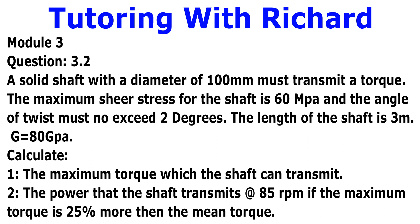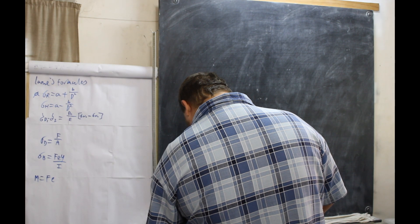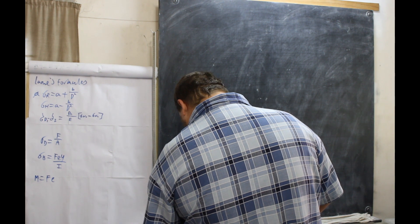Our question: a solid shaft with a diameter of 100 millimeters must transmit a torque. The maximum shear stress for the shaft is 60 megapascals and the angle of twist must not exceed two degrees. The length of the shaft is 3 meters and the modulus of rigidity is 80 gigapascals. We have to calculate the maximum torque which the shaft can transmit, and the power that the shaft transmits at 85 revolutions per minute if the maximum torque is 25% more than the mean torque.